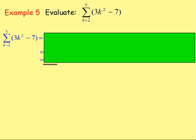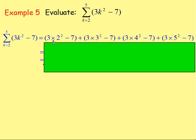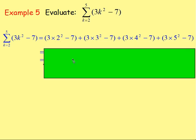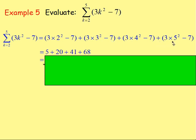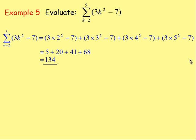Example five: evaluate the sum of 3k² − 7 going from k equals two up to five. Starting with k as two: three times two squared, take away seven. Then k equals three: three times three squared, take away seven. Then k equals four: three times four squared, take away seven. Then k equals five: three times five squared, take away seven. Working that out gives: five, twenty, forty-one, and sixty-eight. We're adding the terms together, so the answer is 134.